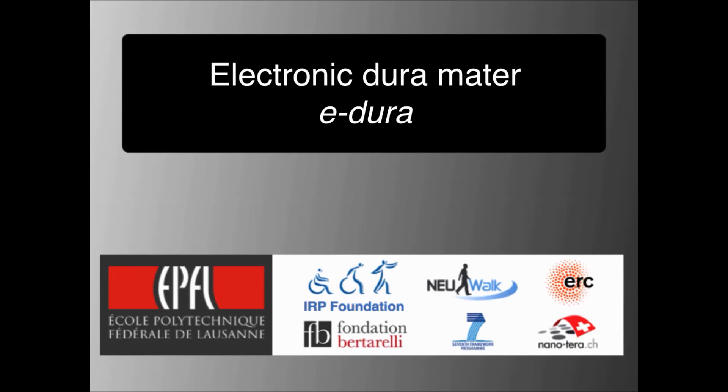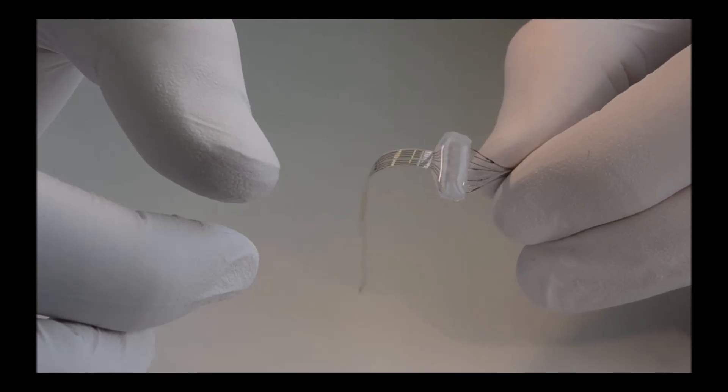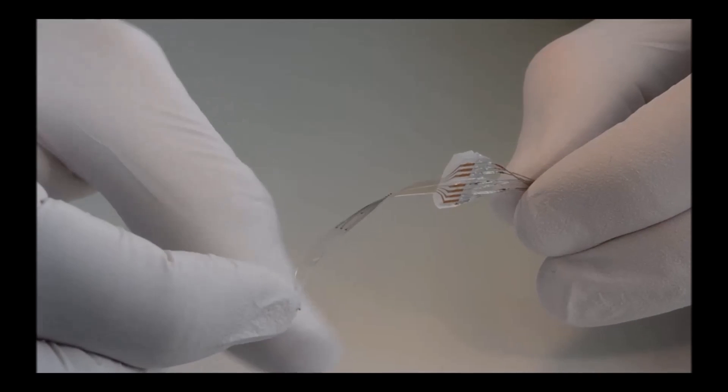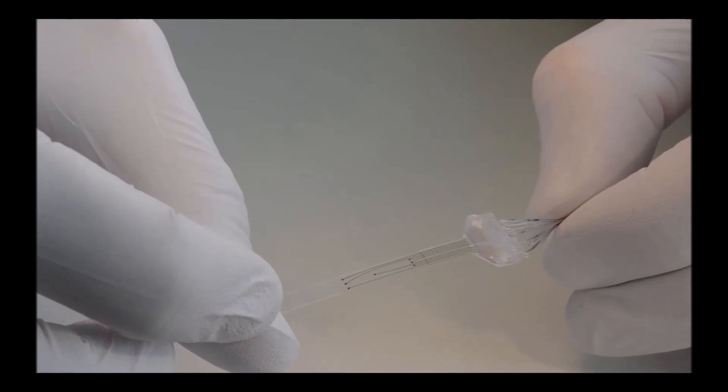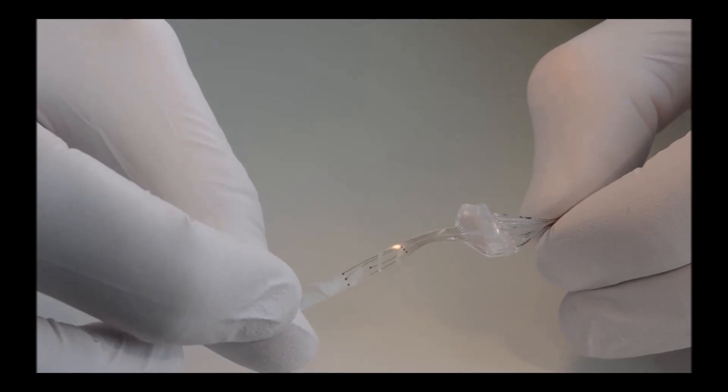Electronic dura matter is a soft multimodal neural implant designed to mimic the compliance of the natural dura matter, the protective membrane of the central nervous system. This electronic dura matter, which we called eDura,